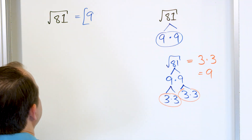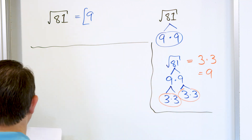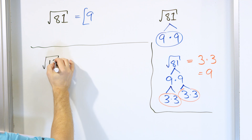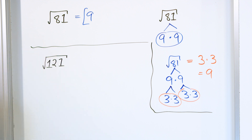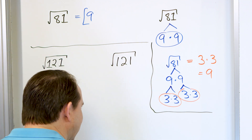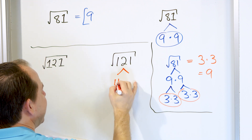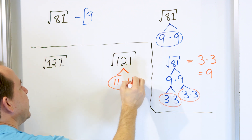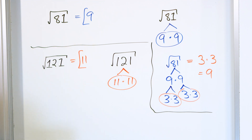Now let's take a look at the square root of 121 — a larger number that most people would probably know. What times what can give me 121? From multiplication tables, 11 times 11 is 121. We're looking for pairs of numbers because it's a square root, so the answer is 11.